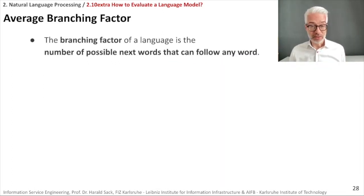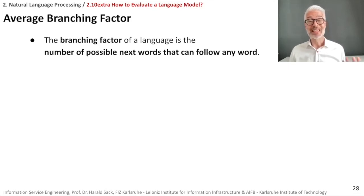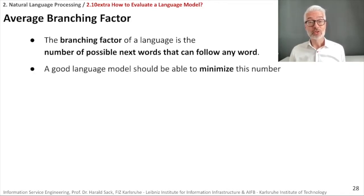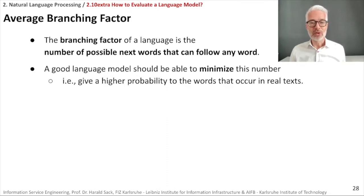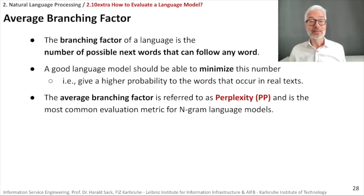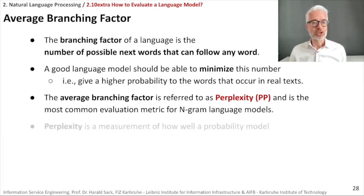The branching factor of a language model is the number of possible next words that can follow any word. A good language model should minimize this number — giving a higher probability to words that really occur in real texts. This average branching factor is referred to as perplexity, and it is the most common evaluation metric for n-gram language models.